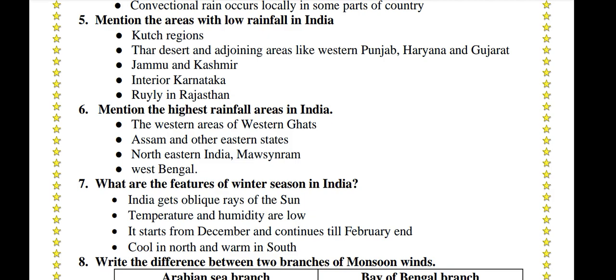Mention the highest rainfall areas in India. The western areas of the Western Ghats, Assam and other northeastern states, West Bengal, and Mawsynram.